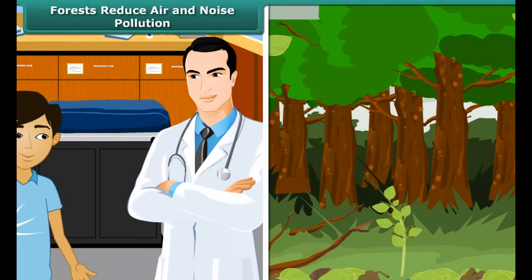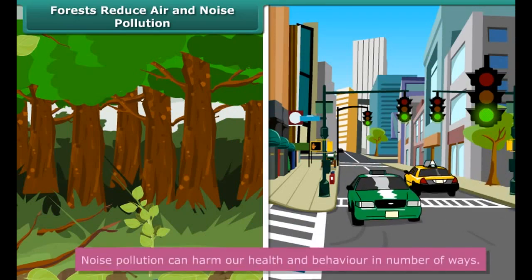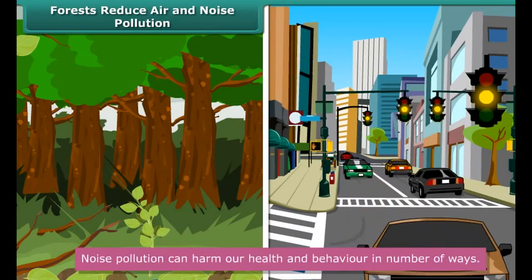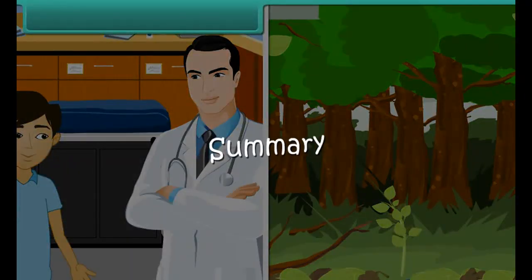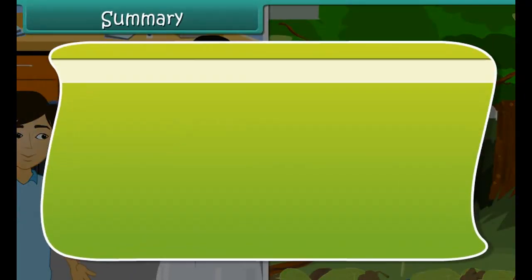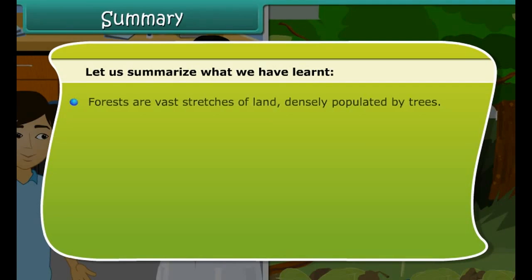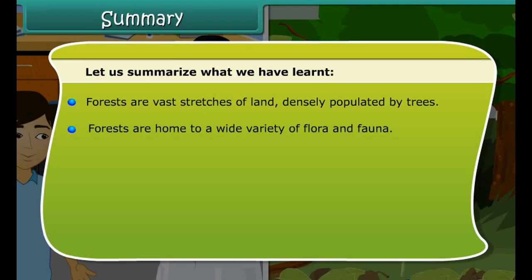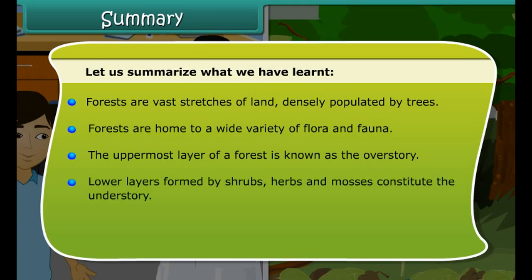Aadil is at a clinic, complaining of an itchy sensation in his eyes and irritation in his throat. The doctor attributes the symptoms to pollution. The smoke and poisonous gases emitted by vehicles and factories cause such symptoms. But the situation would have been worse had there been no forests, because trees clean up the air by absorbing carbon dioxide and releasing oxygen. Forests also absorb and block noise from the urban environment, making the earth a more livable place.